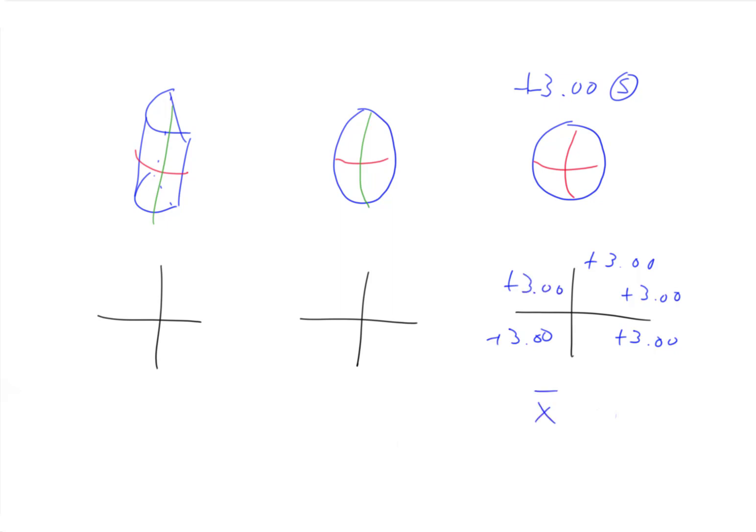So if we were to find the average power for that lens, it would be plus three. Everywhere on the lens is plus three.